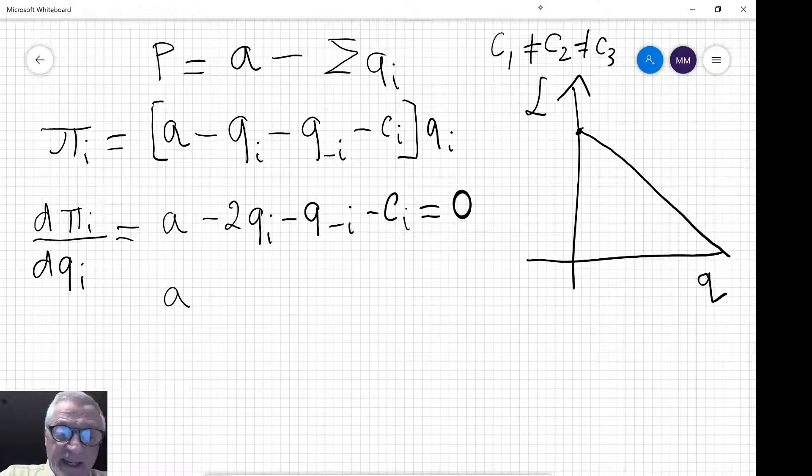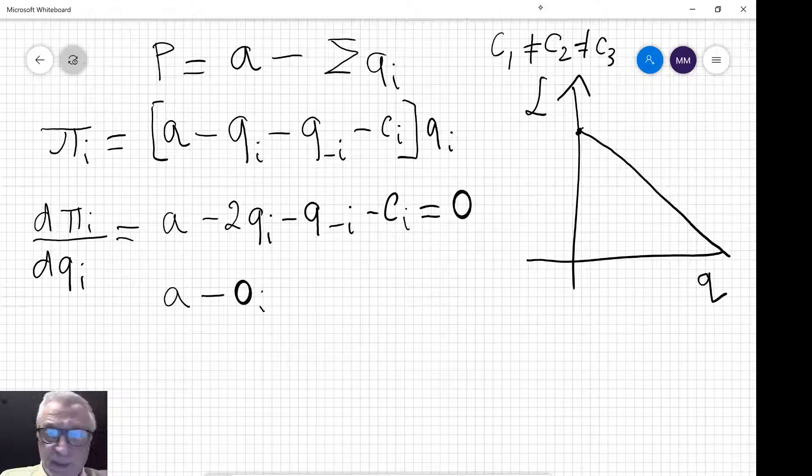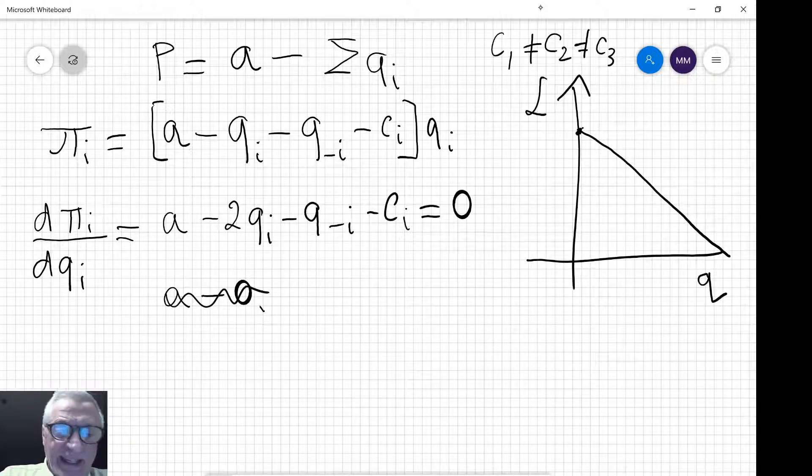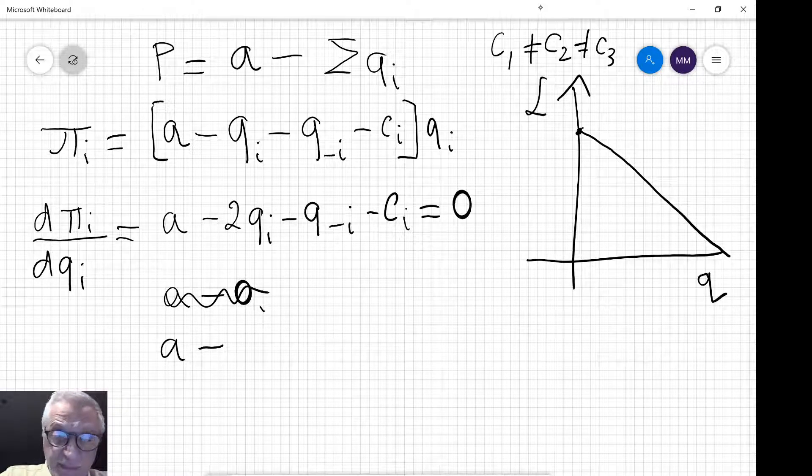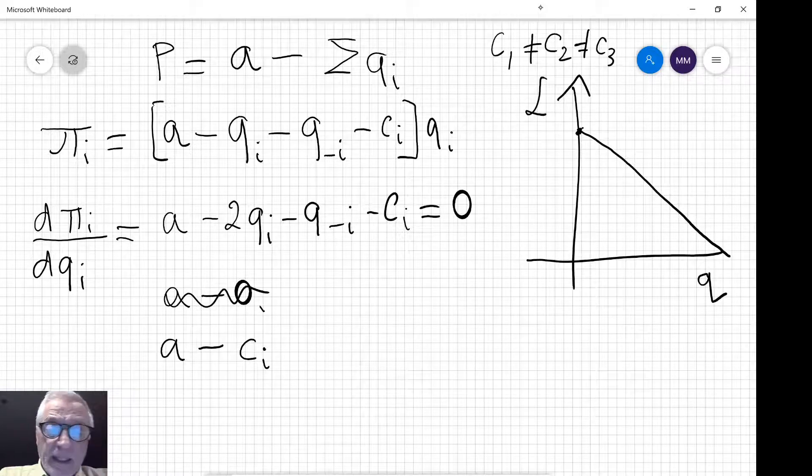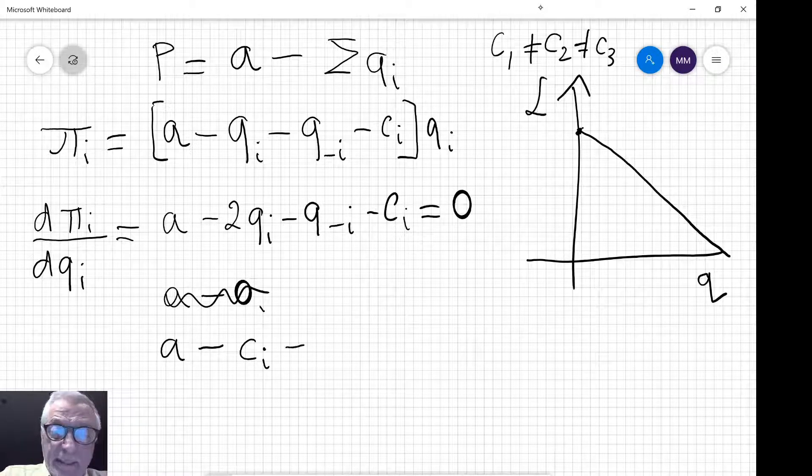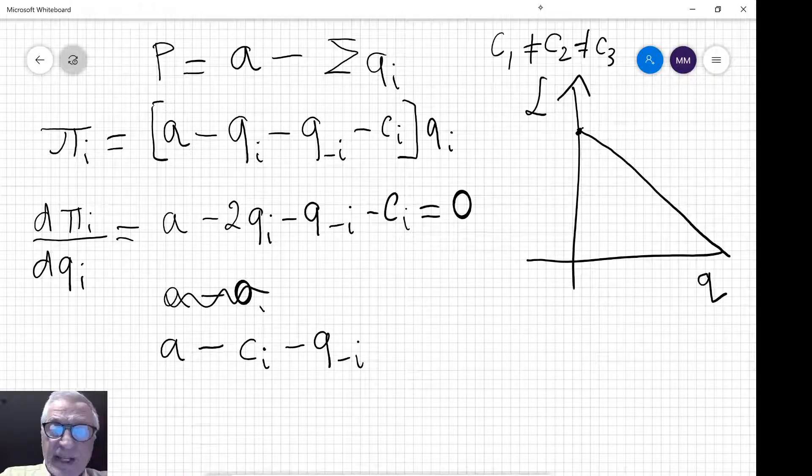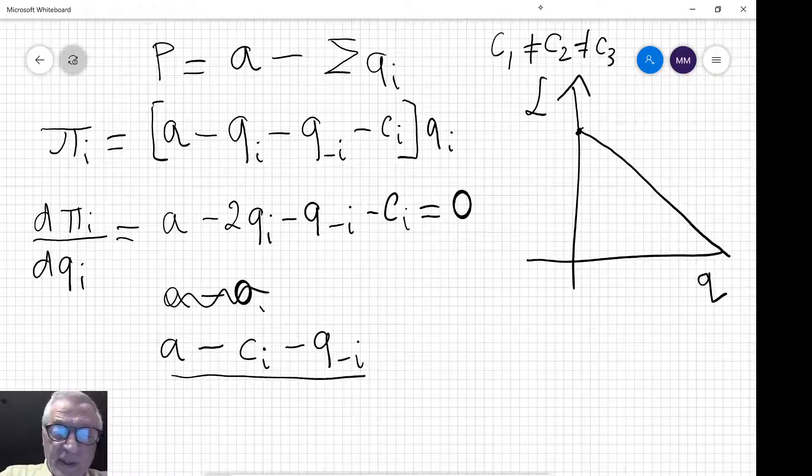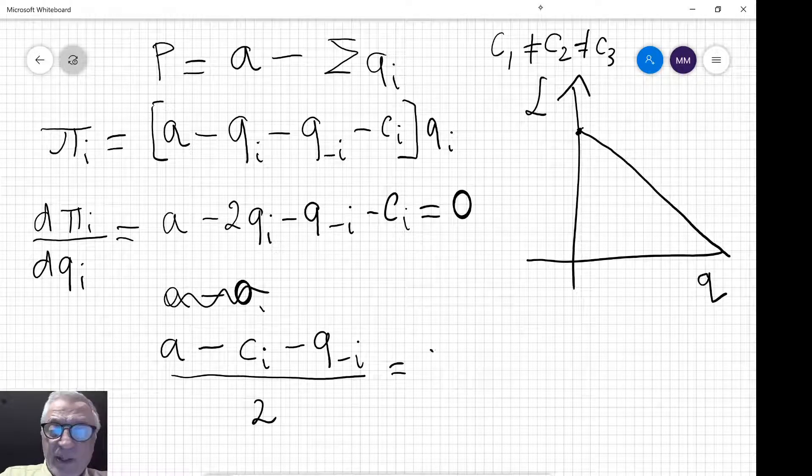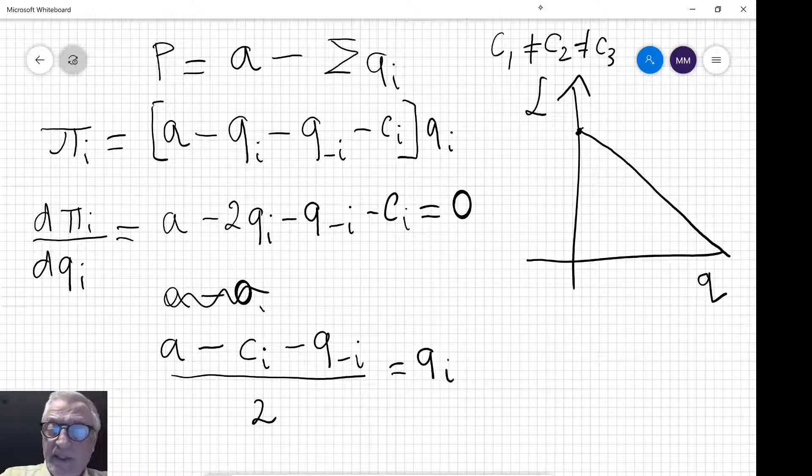We are going to write this as: a minus marginal cost of firm I minus everybody else's output divided by 2 is the output of firm I.